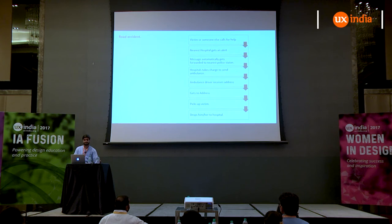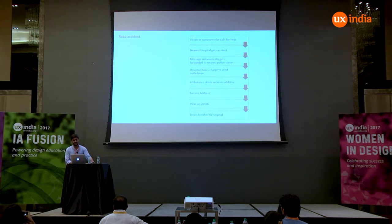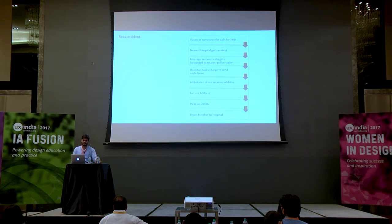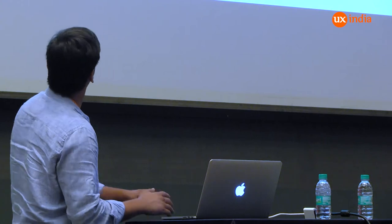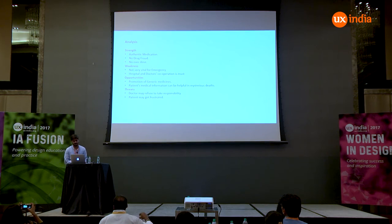Similarly, labour and childbirth will work the same way. In the case of a road accident, the injured person or someone else can simply click a button on the app for the whole smart city, and the ambulance driver can track the GPS location of the injured person, go directly to the accident site, and get the victim to the nearest hospital. The SWOT analysis shows that the system's strengths include authentic medication, no drug fraud, and no overdose, while the weakness is that it is not really vital for emergencies.